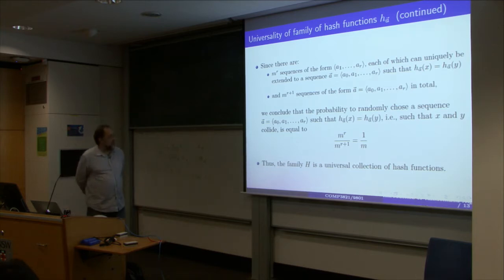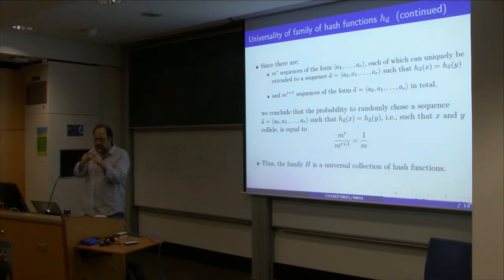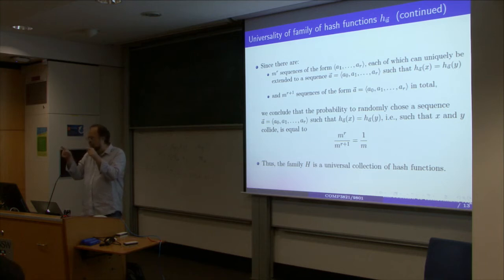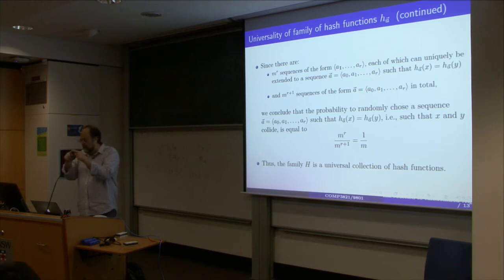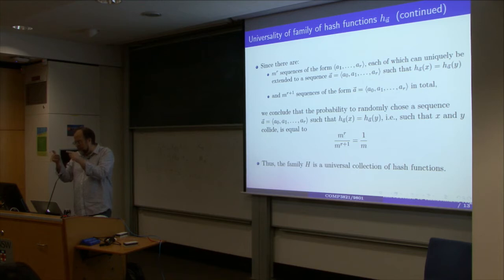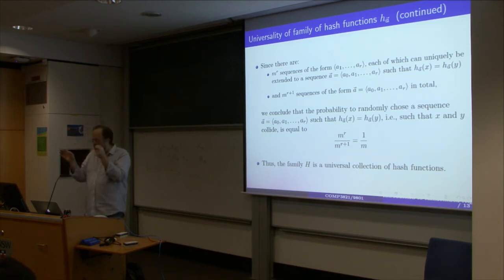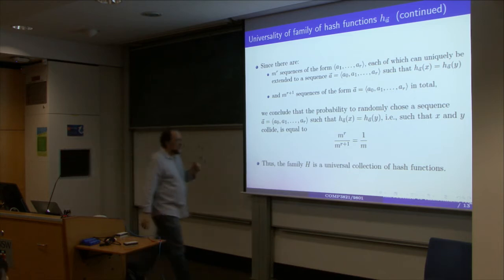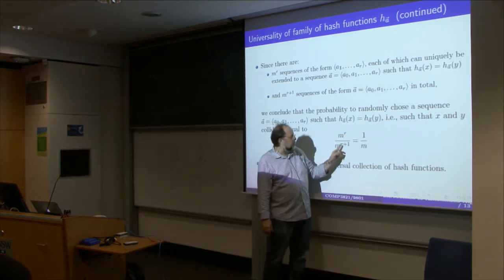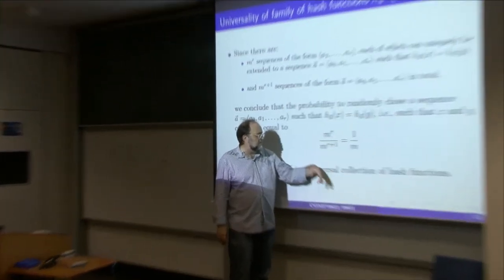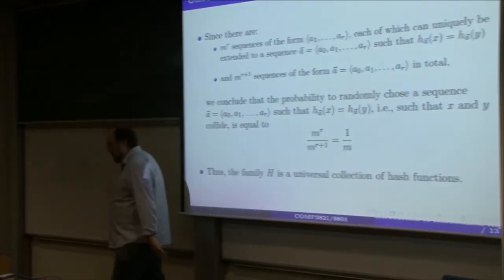Hash functions are represented as tuples of length r+1. We showed that for every choice of the last r elements, there is only one choice for the first element that causes a collision. So the total number of functions causing a collision is m^r, and the total number of all hash functions is m^(r+1), giving a fraction of exactly 1/m.